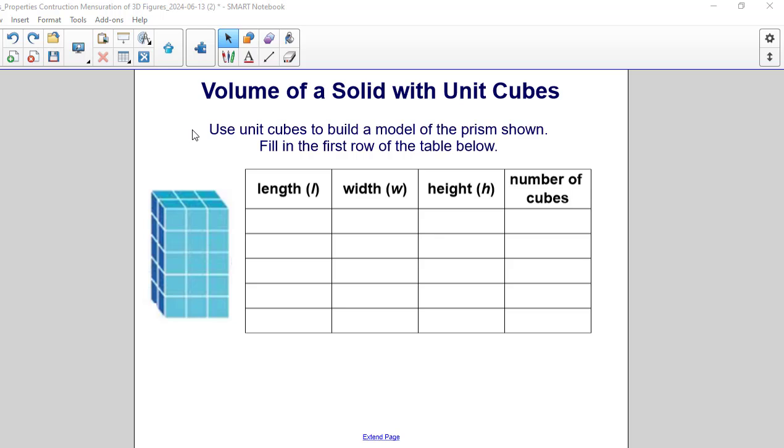Use unit cubes to build a model of the prism shown. Fill in the first row of the table below. So here we have a set of unit cubes, and across the front we'll refer to that as the length. We see that we have three unit cubes, one, two, and three. The width is the part going back, and we look and we see we have two cubes going back.